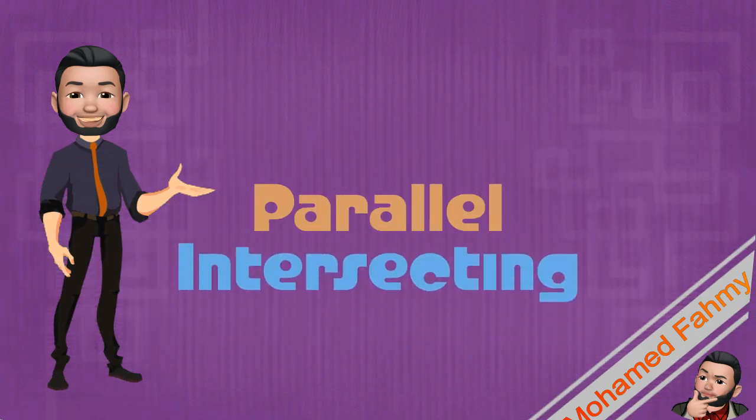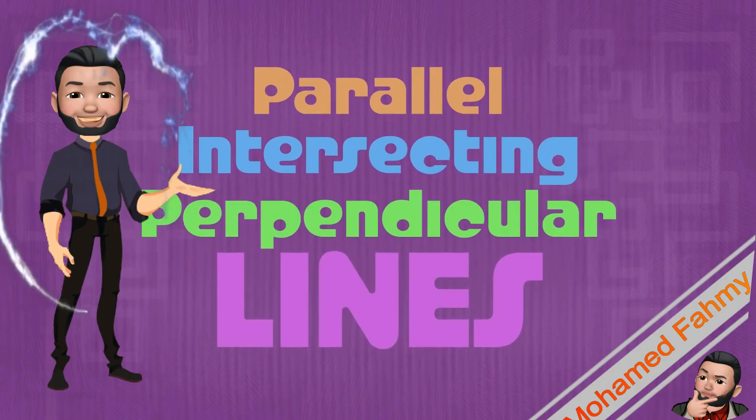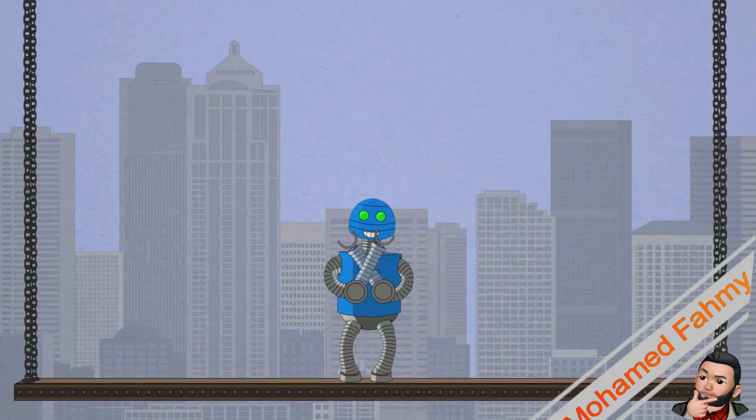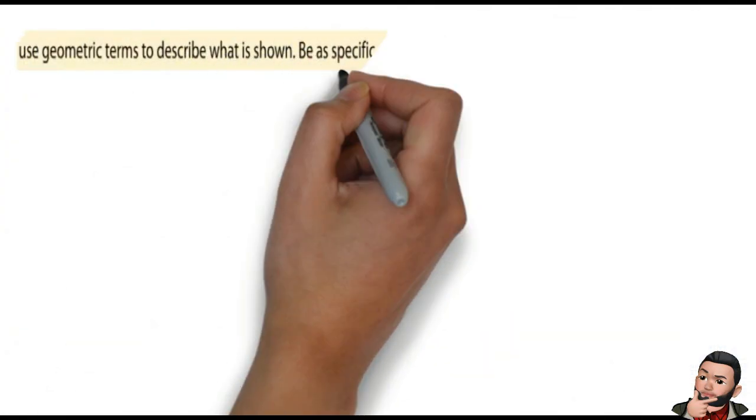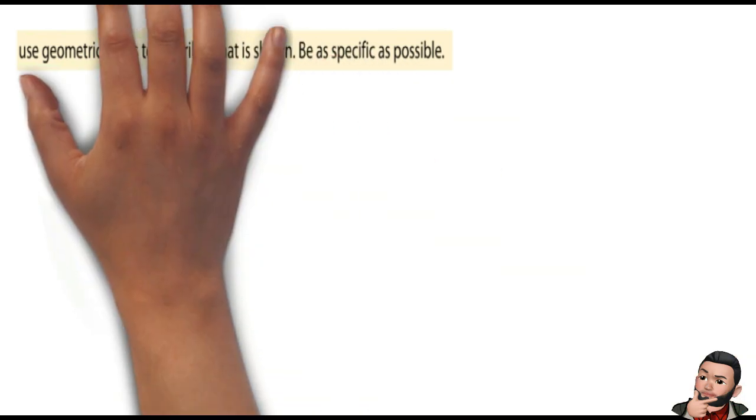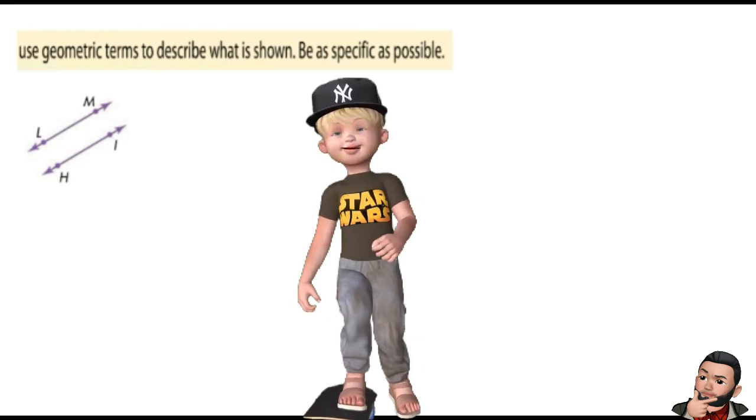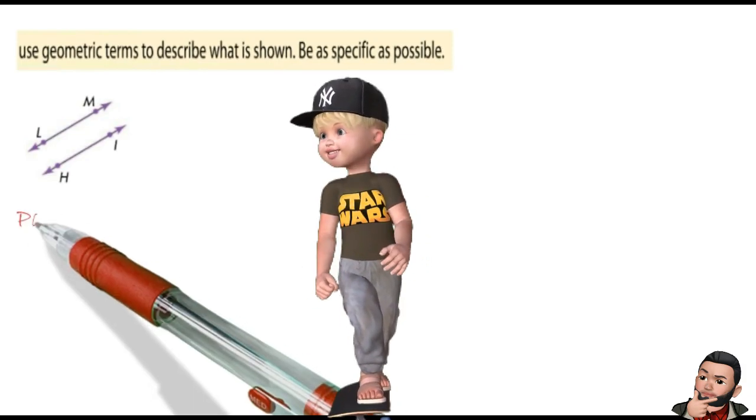Now we're gonna represent parallel, intersecting, and perpendicular lines using geometric terms. Here we go. Use geometric terms to describe what's shown. The first example: we have a line called L M, and another line called H I. These two lines never intersect, so we call them parallel lines.